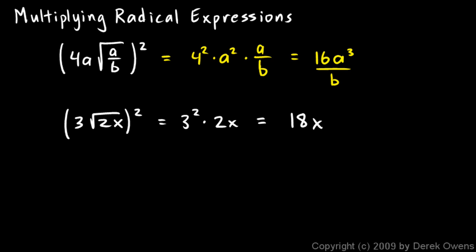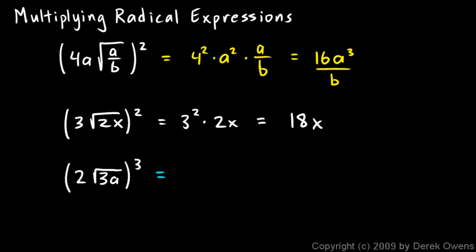The next example is 2 times the square root of 3a, and all of that is cubed. To solve this, we need to take these two things — the 2 and the square root of 3a — and cube all of those. So this will equal 2 cubed times the square root of 3a cubed. That's the square root of 3a times the square root of 3a times the square root of 3a, because that's what it means to cube something — we multiply it three times.